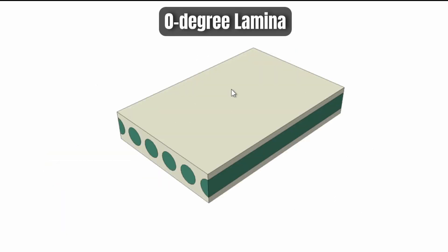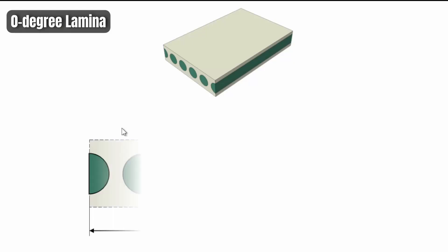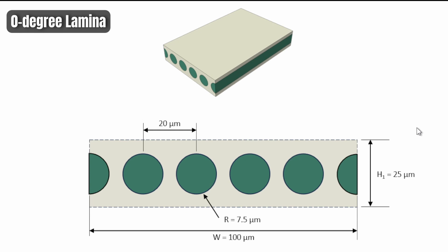Focusing on the 0-degree laminate: it has a dimension of 100 by 140 in the in-plane direction. Since it's one of four stacks of lamina, the height h1 will be 25 microns. This will be the in-plane distribution of the fibers — five fibers in this direction, with a center-to-center separation distance of 20 microns and a fiber radius of 7.5 microns.